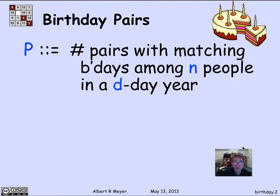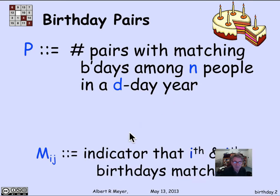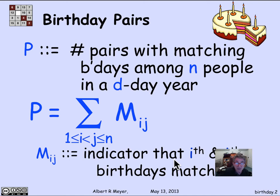January and November tend to be more popular months than other times, but let's ignore that. Because in the applications in crypto, things really are uniform, and it makes our analysis easy if we assume birthdays are equally likely. P is the number of pairs of birthdays that match in this population of n people. Let's get a grip on P by thinking of it as a sum of indicator variables. Let Mij be the indicator variable that the i-th and j-th people among the n have a matching birthday.